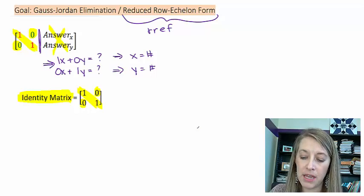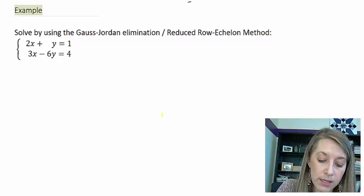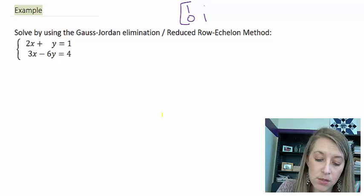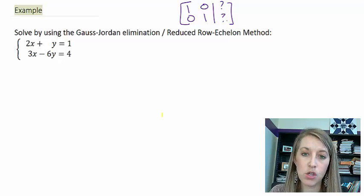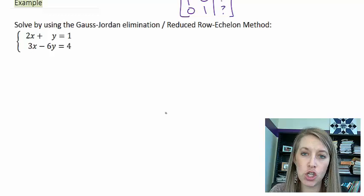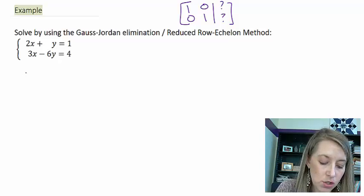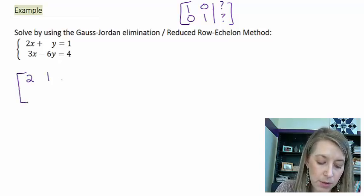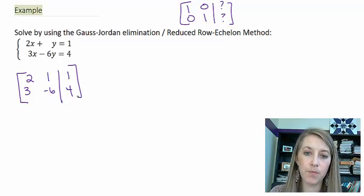I have another example of this, and we're going to solve this by using the RREF method, reduced row echelon method, or the Gauss-Jordan method. Our goal is to get ones here, zeros every other place, and then whatever we end up with is our answer. So let's see if we can do this one without changing it back and forth between equation method. We're just going to keep it in the number sense here. I have 2x plus 1y equals 1, and 3x minus 6y equals 4.